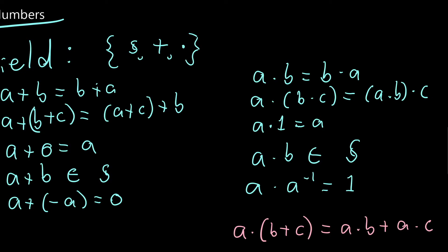An example of a field is the rational numbers — they have all these properties, so they're good. The natural numbers aren't a field, because they don't have a multiplicative inverse, nor do they have an additive inverse. The integers are a little bit closer to being a field, because they do have the additive inverse, but they don't have the multiplicative inverse. So each time we generalise, we end up introducing more structure. We should expect the same going from the rational numbers to the real numbers — they at least have this field structure. These are called the field axioms; if you can't remember them, just think about what happens with the rational numbers.